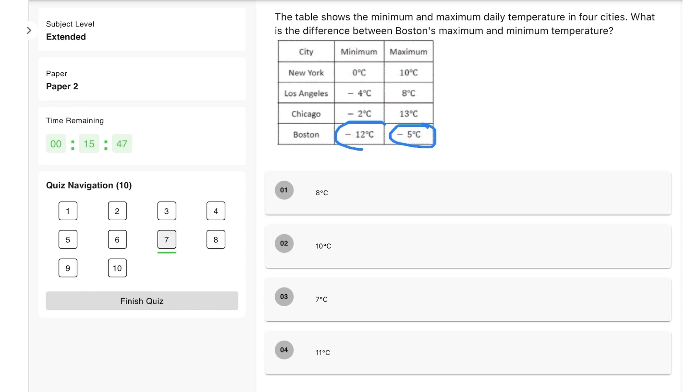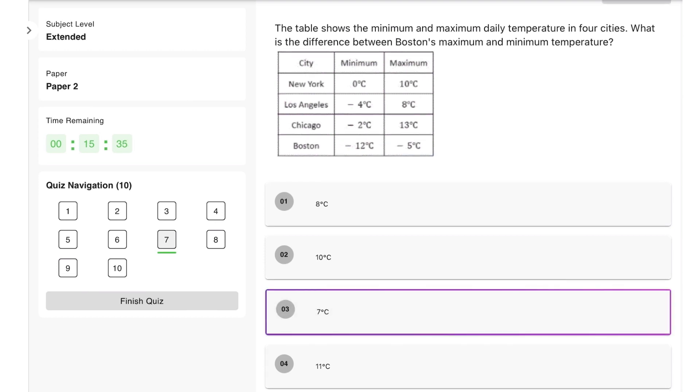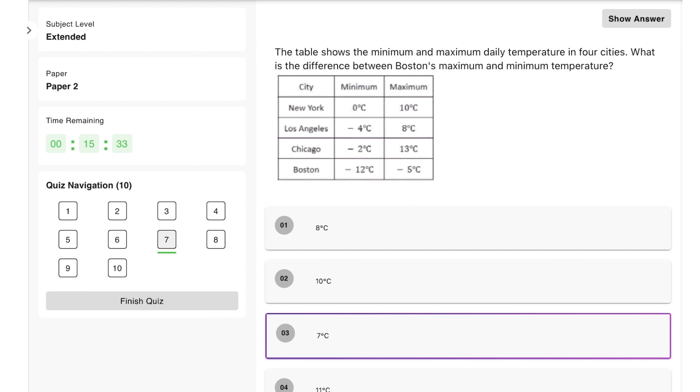Finally, what is the difference between Boston's maximum and Boston's minimum temperature? The maximum temperature is negative 5, the minimum is negative 12. We can see the difference in temperature is basically seven degrees. Going for option three. That brings us to the end of our question practice session. Join us for the next lesson.